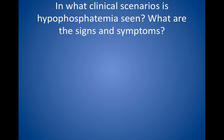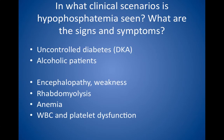In what clinical scenarios is hypophosphatemia seen? What are the signs and symptoms? Hypophosphatemia primarily is seen in patients with uncontrolled diabetes, especially diabetic ketoacidosis, and alcoholic patients. Signs and symptoms of hypophosphatemia include neuromuscular disturbances such as encephalopathy or weakness, rhabdomyolysis especially in alcoholic patients, anemia, and white blood cell and platelet dysfunction.